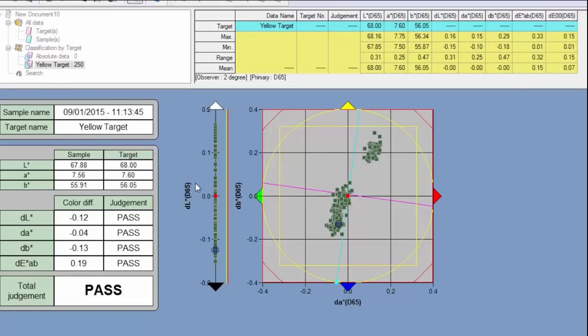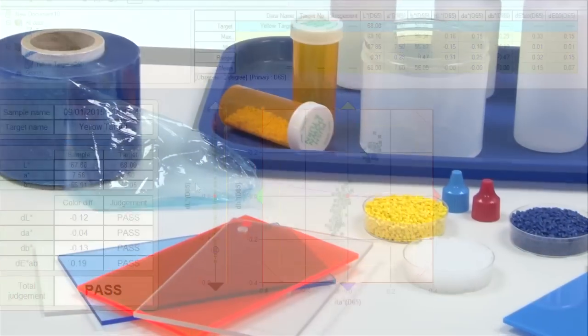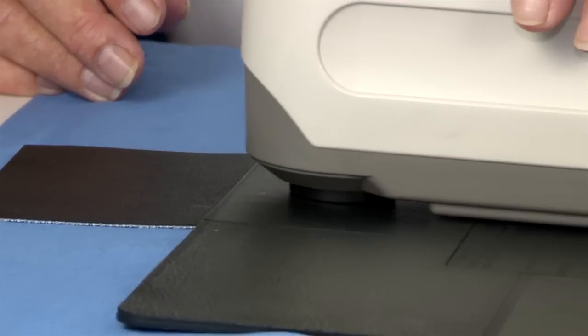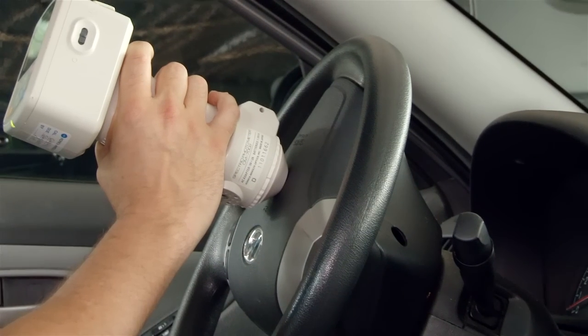With SpectraMagic NX software you can perform comprehensive color inspection, analysis of incoming raw materials, in-process production, and outbound color-critical goods and materials in virtually any industry.